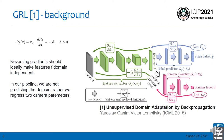A bit of background on this: a gradient reversal layer is a layer in a neural network which behaves as the identity function in the forward pass and reverses and scales the gradient in the backward pass. This was proposed back in 2015 by Ganin and Lempitsky for unsupervised domain adaptation, where features should be independent of the domain where they come from.